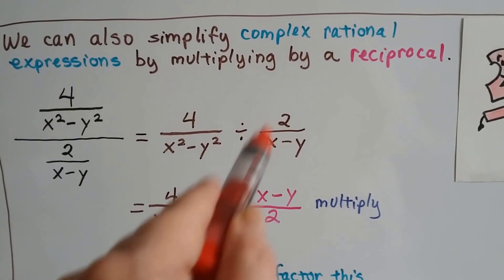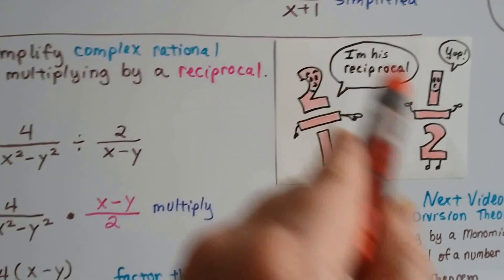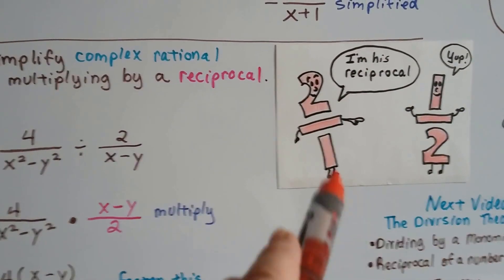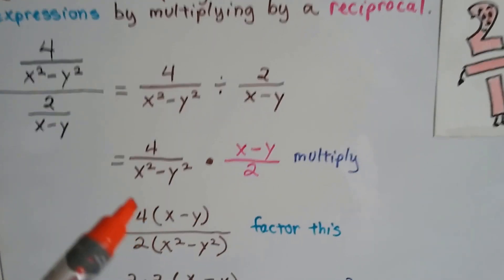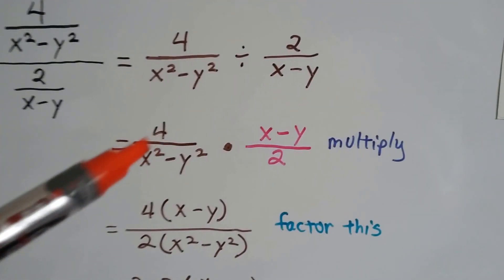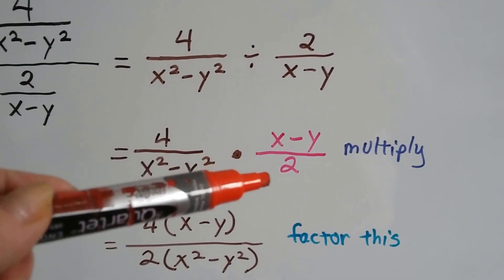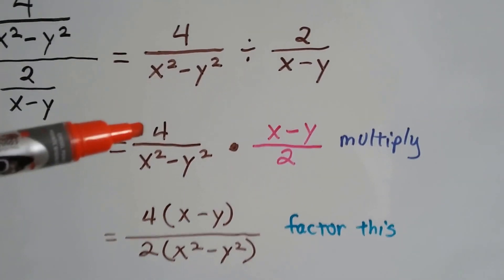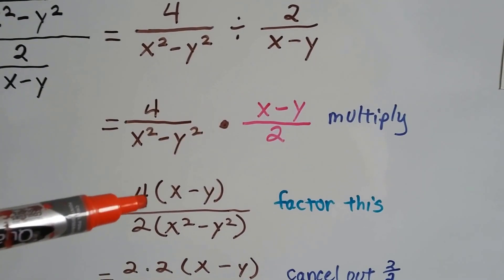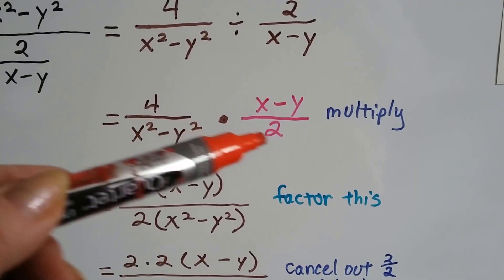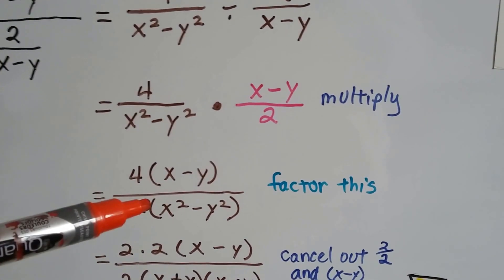So all we have to do is flip this guy around to be the reciprocal — the upside down version — and just multiply. When we multiply across now, because we flipped it over, we get 4 times x minus y, and we get 2 times x squared minus y squared.